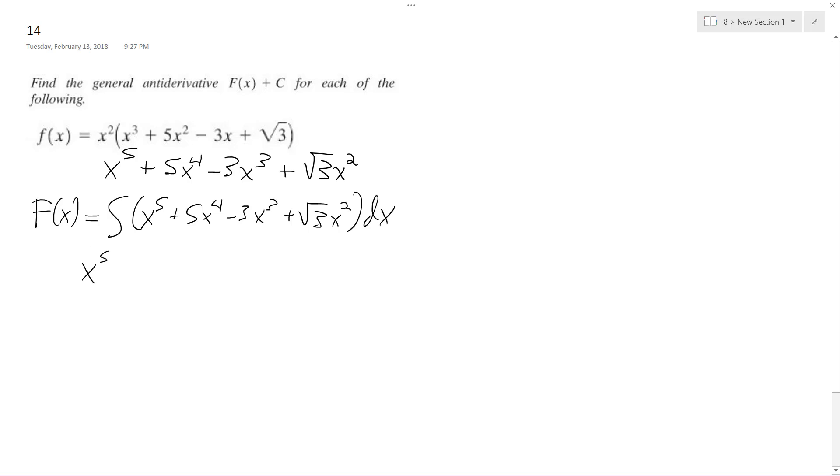So what we get is x to the fifth plus 1 over 5 plus 1, plus 5x to the fourth plus 1 over 4 plus 1, minus 3x to the third plus 1 over 3 plus 1, plus square root of 3x squared plus 1 over 2 plus 1, plus C.